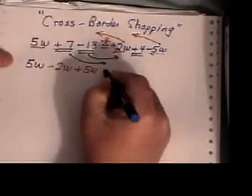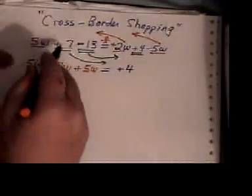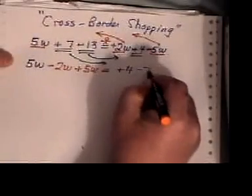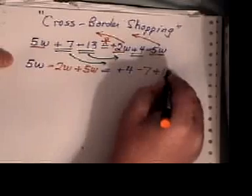On the right hand side, plus 4 we already had there, plus 7 becomes minus 7, and minus 13 becomes plus 13.